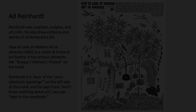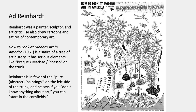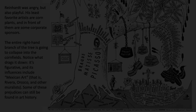This is one of many cartoons made by Ad Reinhardt, who is a painter and sculptor as well as an art critic. He drew a lot of satires of contemporary art, and this one is called 'How to Look at Modern Art in America' from 1961. It has some serious elements — the trunk of the tree is Braque, Picasso, Matisse. Reinhardt was in favor of pure abstract painting; his own paintings are hard-edge abstractions. On the left side of the trunk he puts that good work, and if you don't know anything about art you could start in the cornfields on the right side.